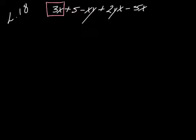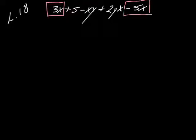I like to use little boxes and circles to separate them. I have a 3X there and I look across my set of terms to find another one with just an X. I don't care what other numbers are on it, I just want an X. There's one right there. When I box this, I'm including the sign in front of it as well. So I'm going to circle with blue.